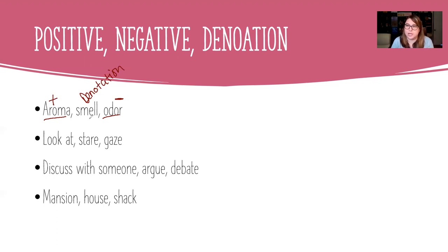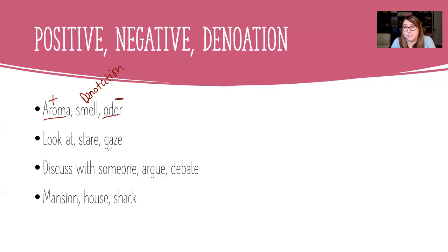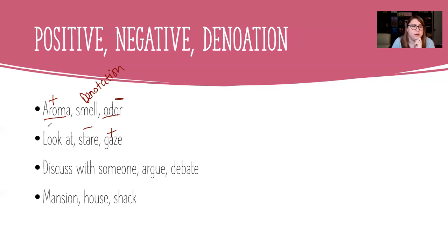Pause the video and try the next three on your own — decide which word is positive, negative, or the denotation. Let's look at look at, stare, and gaze. 'Gaze' makes me think of stargazing and couples looking lovingly at each other — so gaze is my positive word. 'Stare' feels really uncomfortable when someone stares at you, so stare is my negative word. That means 'look at' is the denotation. Stare and gaze both mean that you look at something — that makes sense.